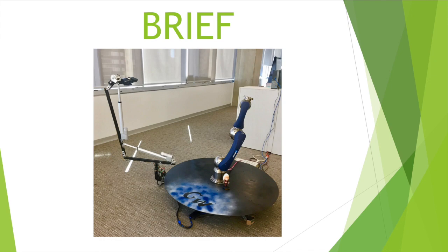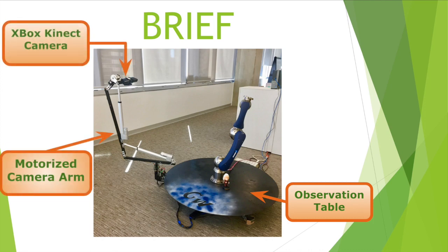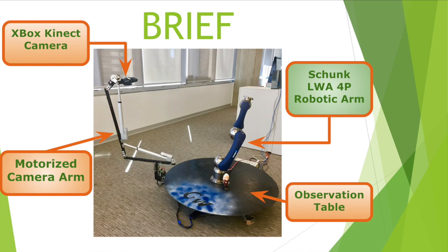This is BRIEF, our biological robotic imaging experimentation framework. It has four main features. The first is the observation table — any object that we want to scan and manipulate is placed on top of it. The next two components of BRIEF correspond to the scanning portion of our system. The camera arm has three motorized joints that can position the camera to a wide array of angles in its own two-dimensional plane. Additionally, the entire camera arm can circumnavigate the perimeter of the table, allowing the camera to take images from even more angles. We are using an Xbox Kinect as our camera, which has both RGB and depth sensors and is fairly cheap. The fourth component of BRIEF is the Shunk robotic arm, which is an excellent tool for manipulating the objects on the table. To sum it up, BRIEF begins by scanning an object on the observation table with the camera arm, then the Shunk robotic arm can interpret the scan and manipulate the object.